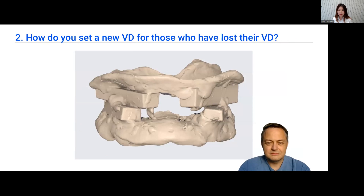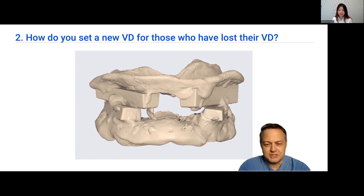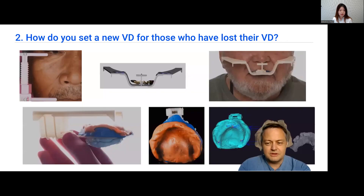Question number two: how do you set a new VD for those who have lost their VD? For these kinds of patients we either do wax rims or wax rim equivalents in the digital workflows. As you can see here, this is done in Medit Design - we printed this, added some wax on top, and registered the bite bilaterally. In the last few months we have jumped to a new technique provided by the MOD Institute.